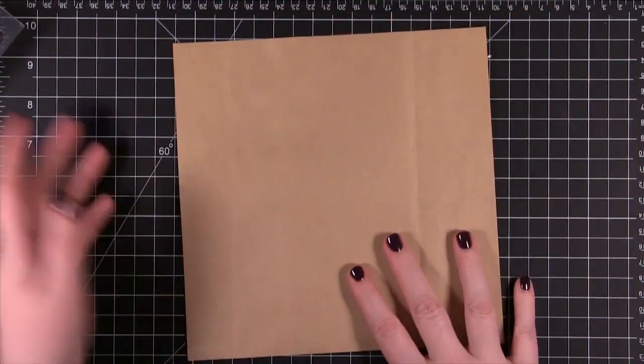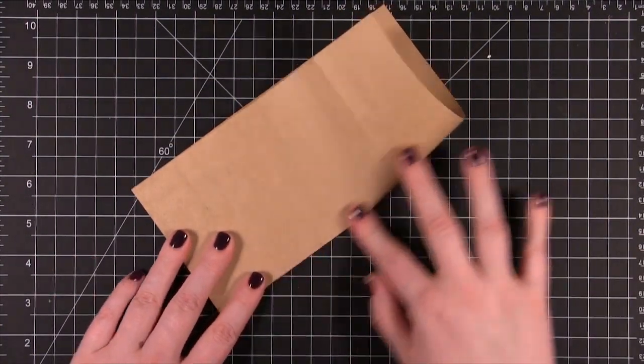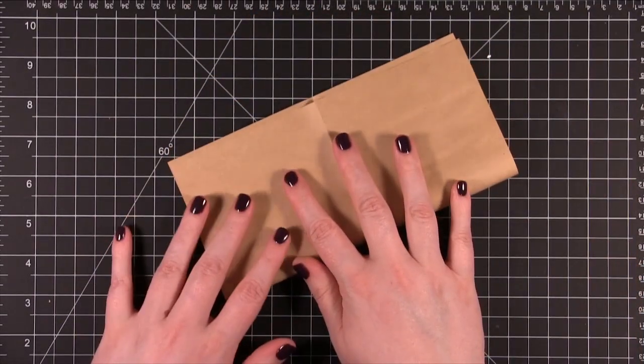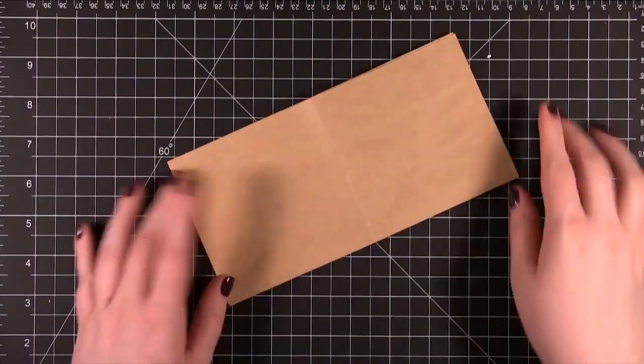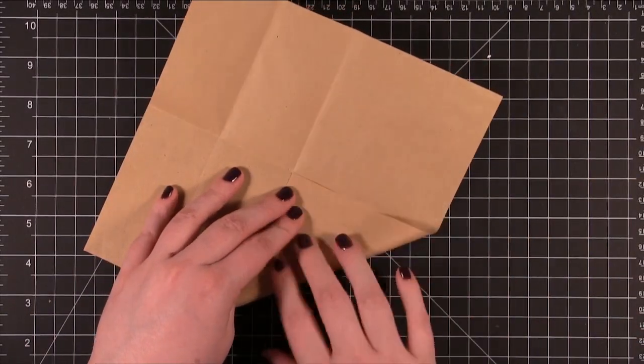So I have the 8 by 8 paper here and we're going to start by folding it in half one way and also folding it in half the other way. Now we're going to take the corners and bring them into the center.